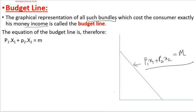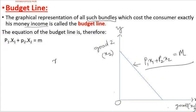On the diagram, good one (x1) is placed on the x-axis and good two (x2) on the y-axis. The origin is point O. Bundles (combinations x1, x2) whose total cost equals the consumer's money income m are plotted, and the line connecting them is the budget line.